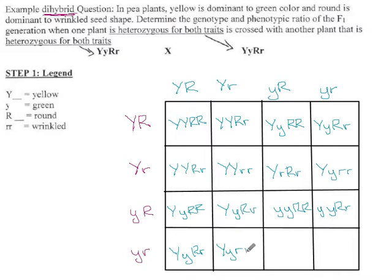You remember with our monohybrid crosses that there was a 1 to 2 to 1 ratio that we saw fairly often. There's a ratio like that with dihybrid crosses too, but it's more complicated, and spoiler alert it's 9 to 3 to 3 to 1.